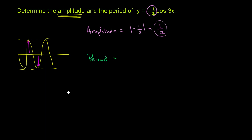The first thing I want to ask is: what does the period of a periodic function even refer to? Let me draw some axes. The period of a periodic function is the length of the smallest interval that contains exactly one copy of the repeating pattern of that periodic function.